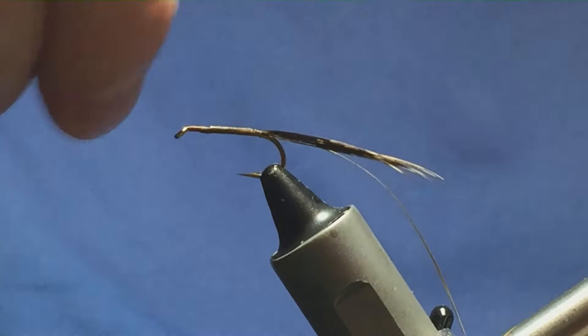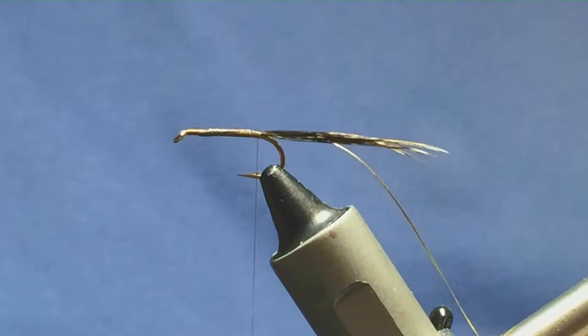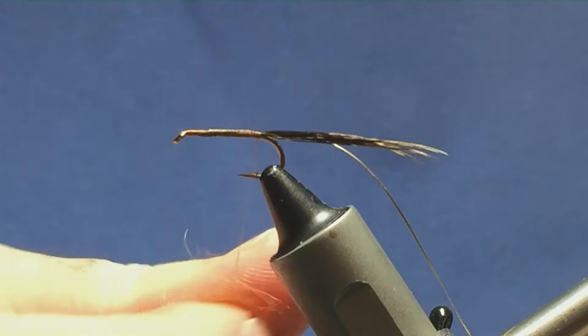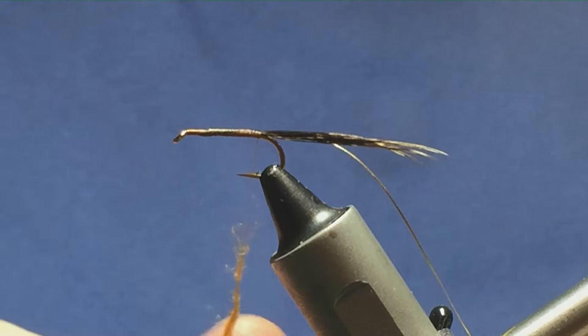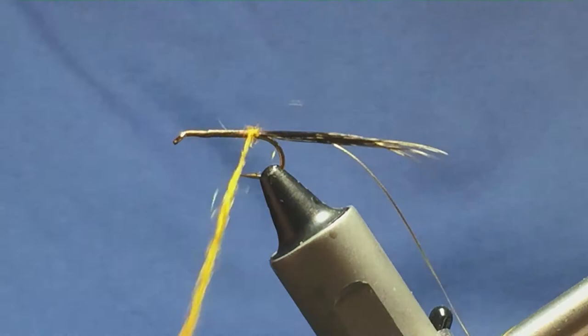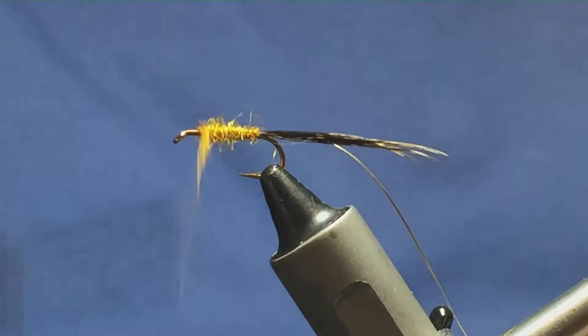The body is going to be dubbed. Just bring that down to the tail. Now, you can use golden olive seal's fur, in this occasion I'm going to use this is a golden olive out of the traditional Irish dubbing range. Just bring your dubbing up the body, just the length of the body to there. Then bring your thread in front of the body.